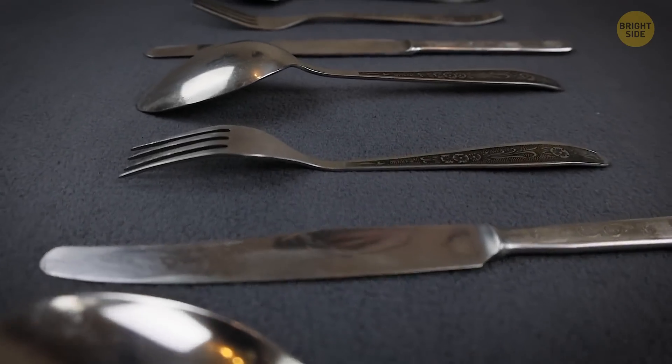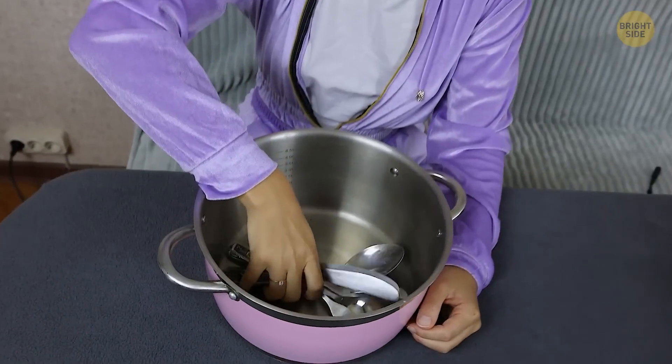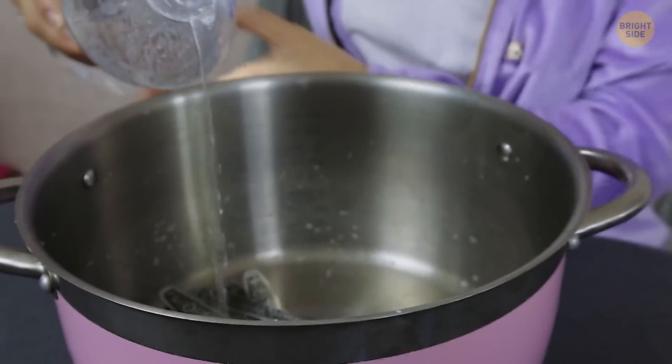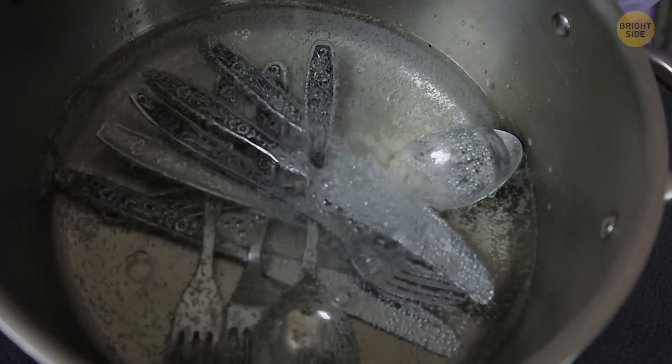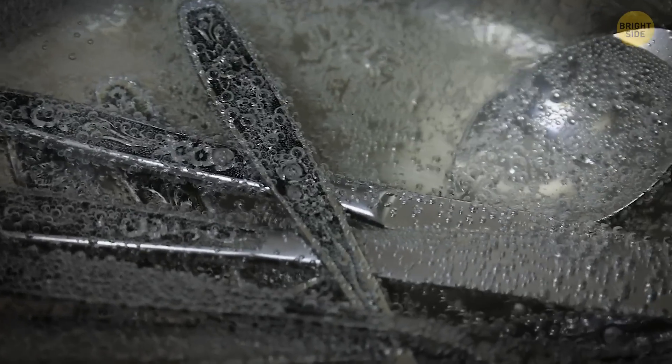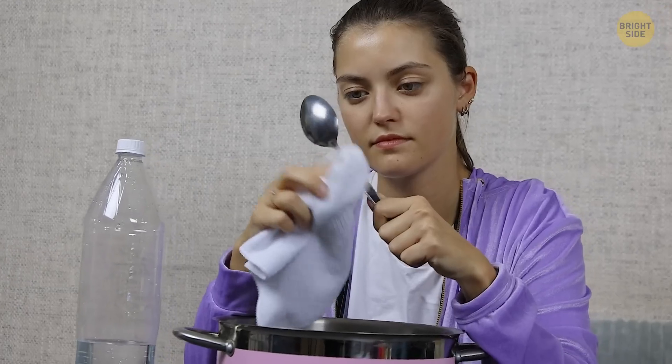Has your stainless steel cutlery and other flatware lost its shine? Put them in a small pan filled with carbonated water. Let them sit until the bubbles have completely gone flat. The steel will shine as good as new once removed and wiped down.